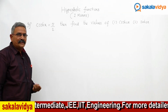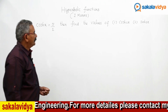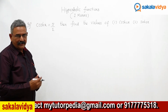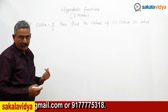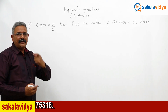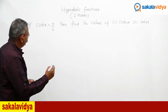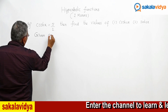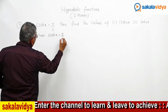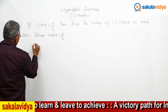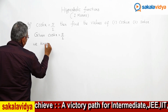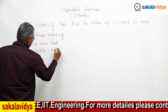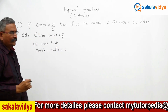If cosh(x) equals 5 by 2, then find the values of cosh(2x) and sinh(2x). Since the cosh(x) value has been provided, let us first find out the sinh(x) value using one of the identities. After that, both values can be evaluated. Given: cosh(x) equals 5 by 2. We recall the identity: cosh²(x) minus sinh²(x) equals 1.